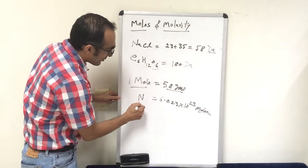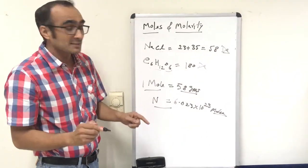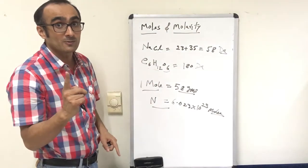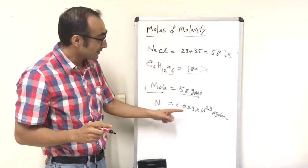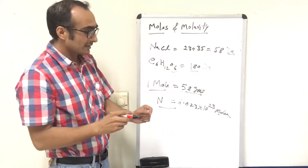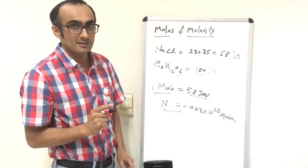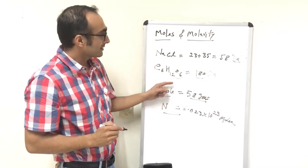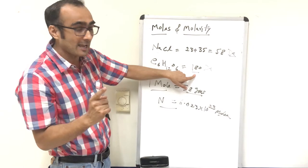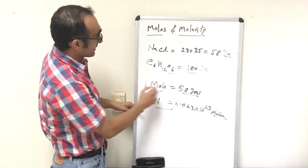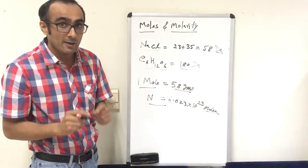Avogadro's number is constant for one mole of any substance. For example, glucose has a molecular weight of 180 Daltons. If you are preparing one mole of glucose, you take 180 grams of glucose. But the total number of glucose molecules in 180 grams would remain the same — one Avogadro's number. So one mole of any substance will have one Avogadro's number of molecules, regardless of the difference in molecular weight between substances like NaCl and glucose.